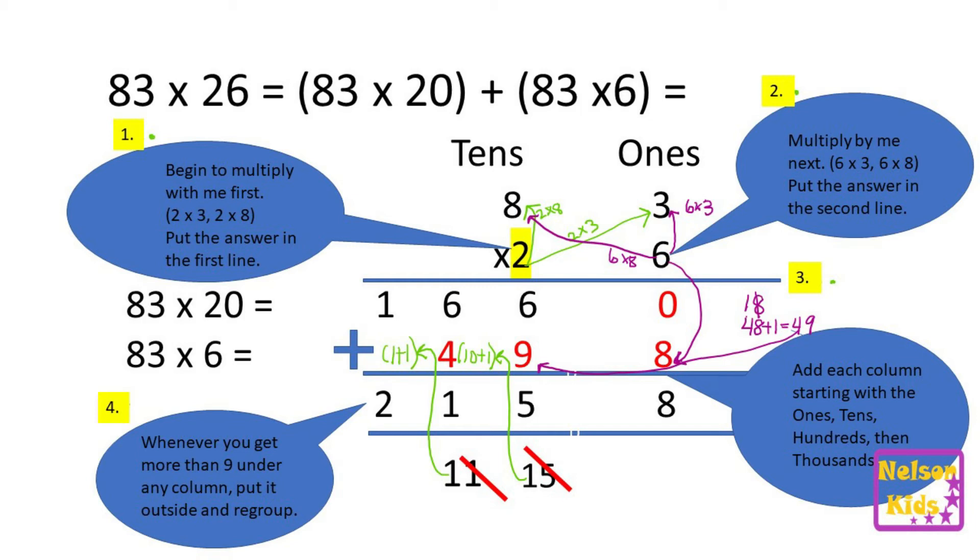By extension, if you add the hundred columns and you say 6 add 4 is 10, you will realize that you get more than nine. Plus you had to add the one from the outside, so 10 add 1 is 11. You cannot put the entire 11 there.